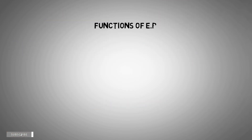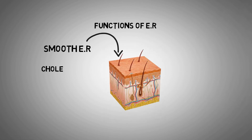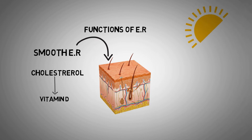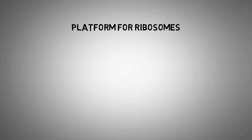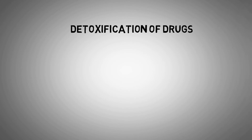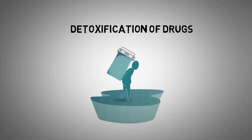The smooth endoplasmic reticulum in skin converts cholesterol into a lipid called vitamin D whenever sunlight strikes the skin. Vitamin D helps to maintain healthy and strong bones. Endoplasmic reticulum also serves as a platform for ribosomes, and it helps in detoxification of drugs — that is, the removal of toxic substances from the body.